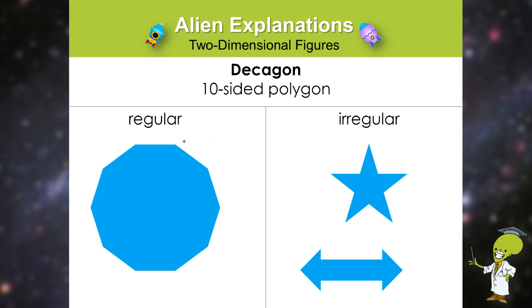Well, to be regular, remember you have to have ten equal sides and ten equal angles. And the star only has five equal angles, which is why the star is an irregular decagon.